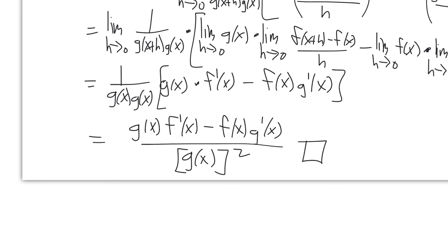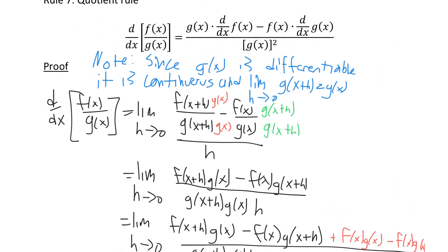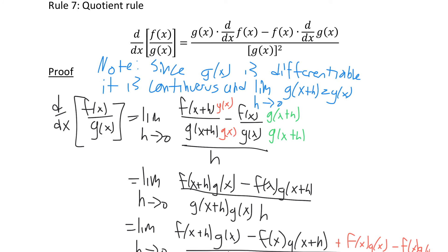A lot of work to prove the quotient rule, but now we can use it whenever we want. It's worth noting why we get g(x) squared in the denominator — and it's quite remarkable. We get a denominator squared because in that very first step, making the denominators common produces a g(x plus h) and a g(x), and it's that common denominator business — going back to basic fractions — that creates two g's and ultimately gives you g squared. It's neat to see how something from basic fractions generates the denominator squared in the quotient rule.